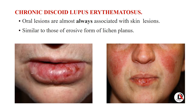In chronic discoid lupus erythematosus, oral lesions are almost always associated with skin lesions and are similar to those of the erosive form of lichen planus. Like SLE with its butterfly rash, DLE also presents with the same butterfly rash.